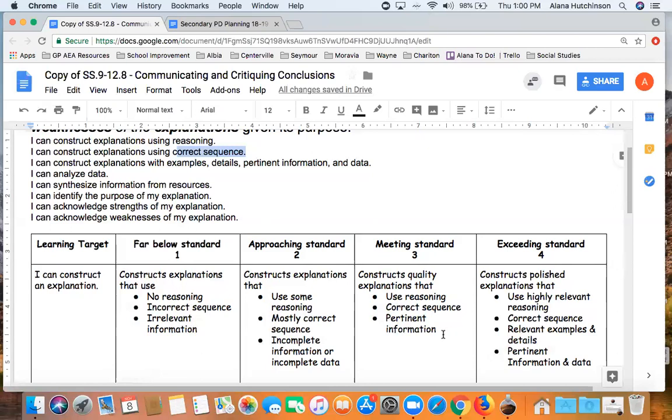I realized some of those words, especially reasoning and pertinent, I'm going to have to teach as academic vocabulary, may not seem as student friendly as they could be, but I wanted to keep that academic language in there, knowing that I'm going to model what those mean in my classroom for students. So it would be an expectation that they understand what it means to use reasoning and what it means to use pertinent information. So that would be a three.